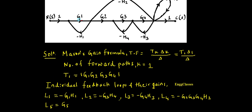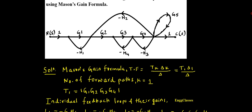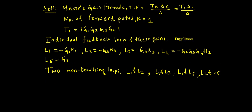There are a few more two non-touching loop pairs. L1 and L5 are also non-touching, so that is another pair. And also L2 and L5 are non-touching. So in total, the two non-touching loop pairs are: L1·L2, L1·L3, L1·L5, and L2·L5.